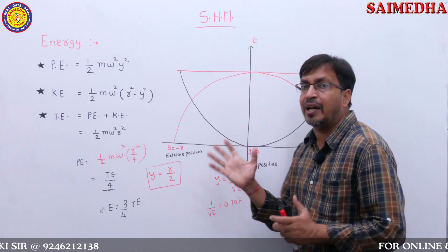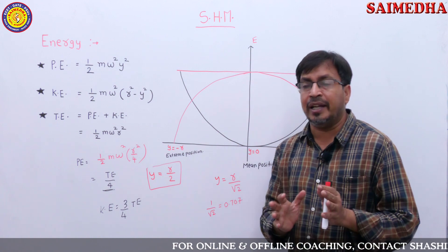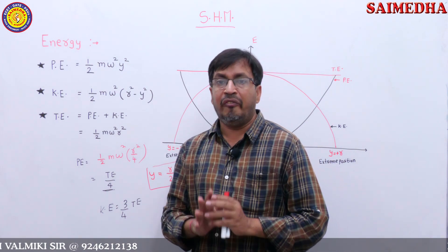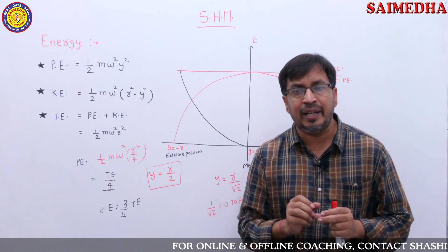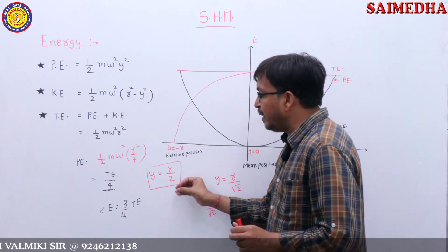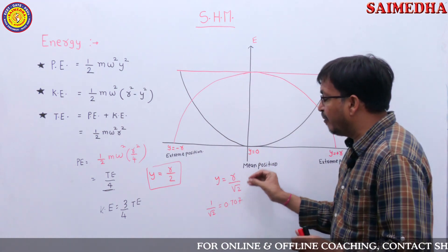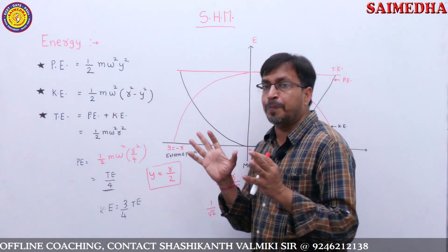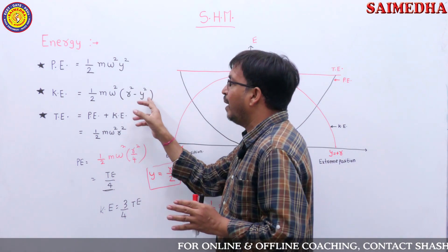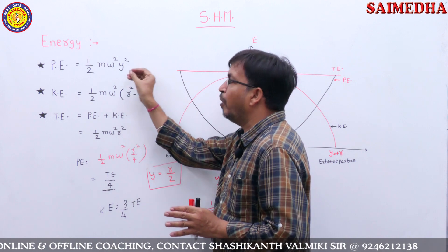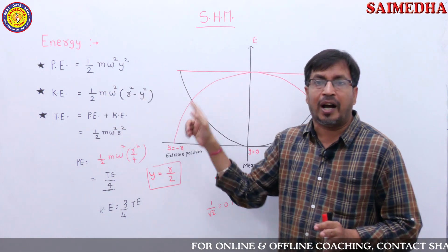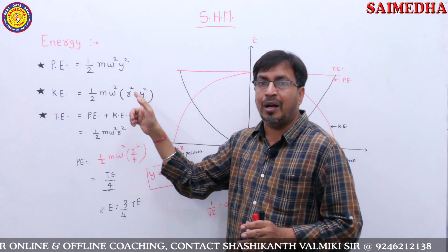Compulsory one question is asked from this topic. Remember only four conditions: when the particle is at mean position (y = 0); when the particle is at extreme position (y = r); when displacement is half of its amplitude (y = r/2); and when displacement y equals r by root 2. For each condition they ask what is potential energy, kinetic energy, and total energy. Just remember two formulas and substitute each condition for y.